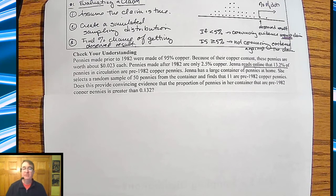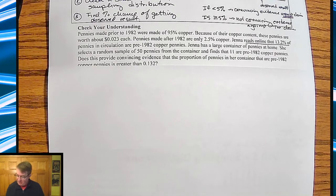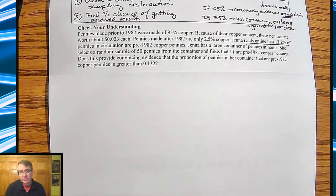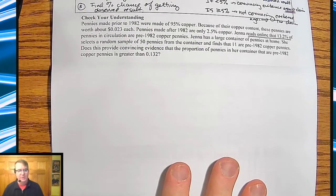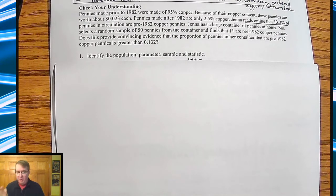Jenna reads that 13.2% of all pennies in circulation are from before 1982. Jenna has a large container of pennies at home. She selects a random sample of 50 pennies from there and finds that 11 of them happened to be before 1982. This is setting up, again, in the College Board exam.